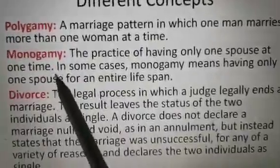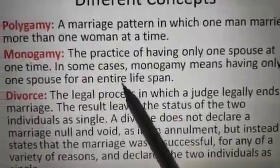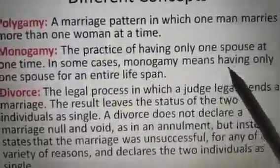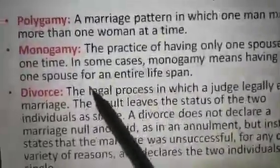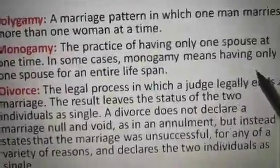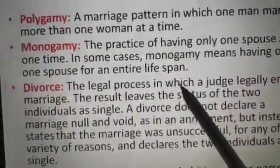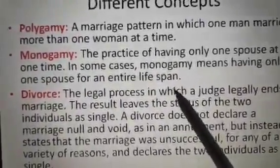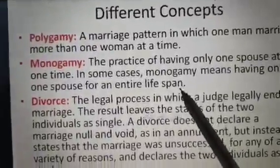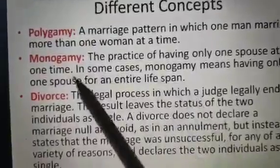The second concept is Monogamy, which is actually practiced in Hindu culture. Monogamy is the practice of having only one spouse at one time. In some cases, monogamy means having only one spouse for an entire lifespan, just like in India, where we very strictly follow the rule of monogamy.